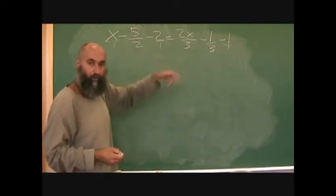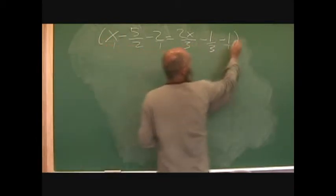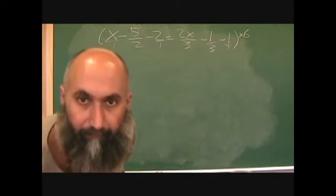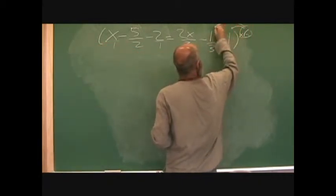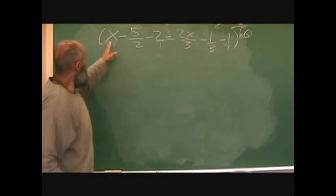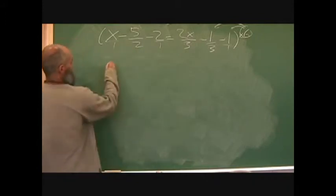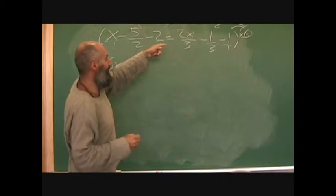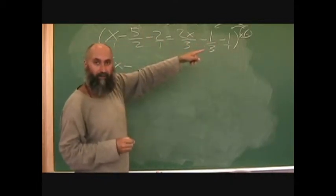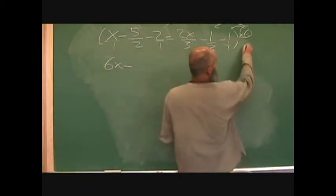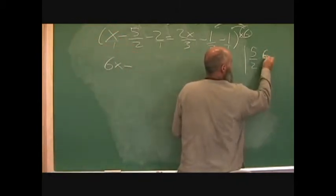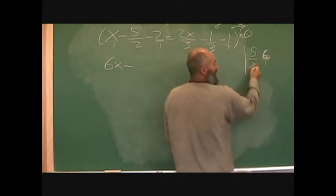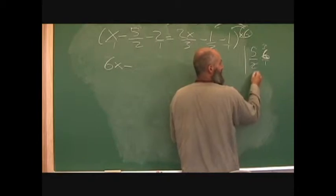What you're going to do is multiply this whole equation by six. Six multiplies every term. X over one times six is just going to be six x. Five over two times six: the two reduces the six down to three, so it's five times three, which is fifteen.